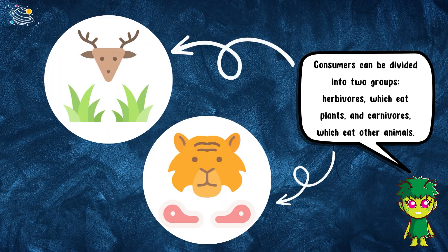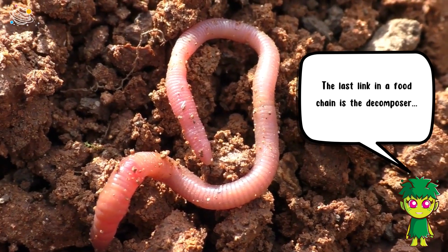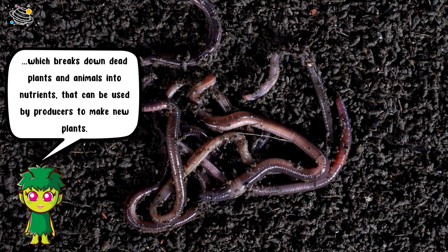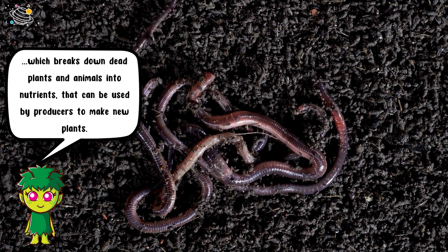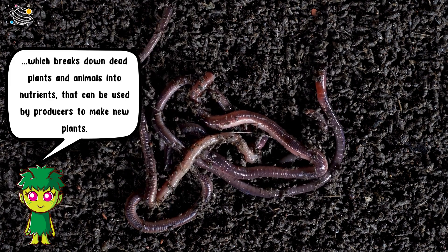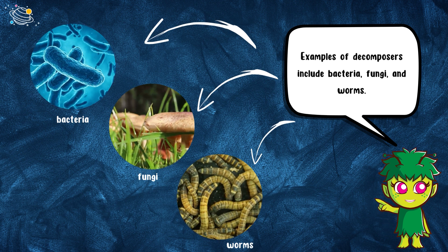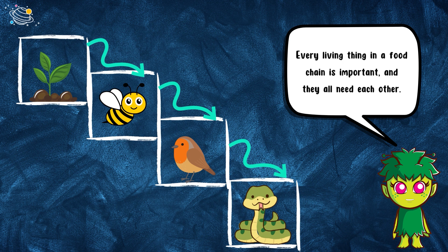Consumers can be divided into two groups: herbivores, which eat plants, and carnivores, which eat other animals. The last link in a food chain is the decomposer, which breaks down dead plants and animals into nutrients that can be used by producers to make new plants. Examples of decomposers include bacteria, fungi, and worms.